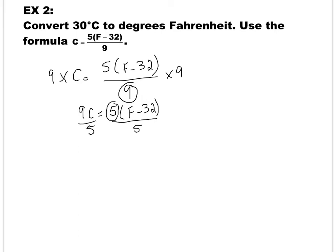So I get F minus 32 because 5 cancelled with 5 is equal to 9C over 5. If you have noticed, I wrote the equation the other way around. Instead of having F minus 32 on the right, I wrote it on the left, which is the same thing. It doesn't matter if I write x is equal to 5 or 5 is equal to x. It has the same meaning. So F minus 32 is 9C over 5. Now I have to get rid of 32, so I am going to move 32 to the right and change the sign, so F becomes 9C over 5 plus 32.